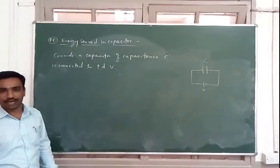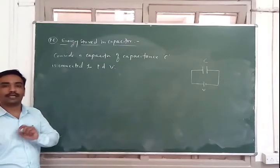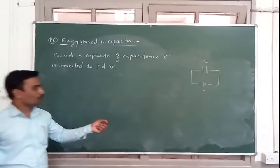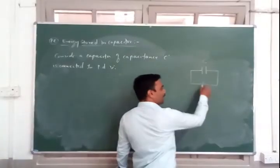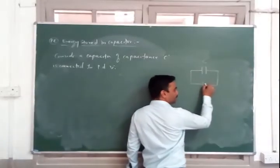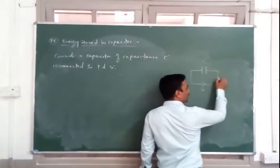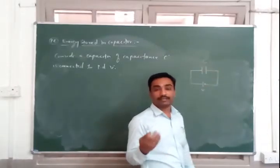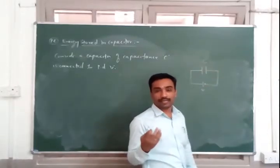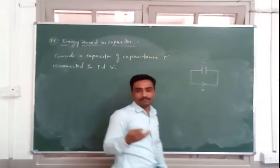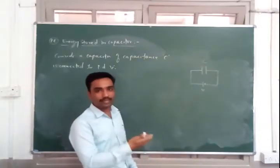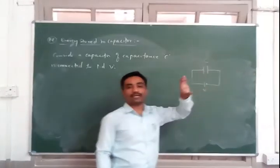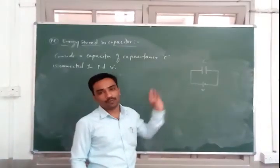Now the capacitor is charged. When the capacitor gets charged, charges are transferred from one place to another. From the negative part of the battery, electrons start to move — those charges are transferred to another place and stored. So that is what work is done — the charges are stored.